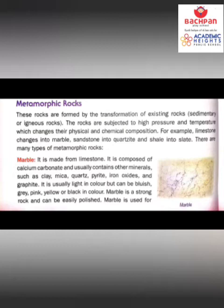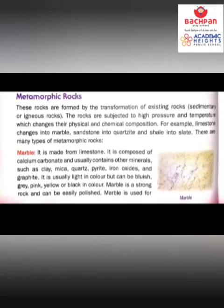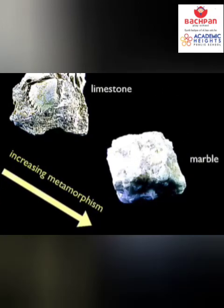Marble is made from limestone. It is composed of calcium carbonate and usually contains other minerals such as clay, mica, quartz, pyrite, iron oxides, and graphite. It is usually light in color but can also be bluish, gray, pink, yellow, or black. Marble is a strong rock and can be easily polished. Increasing heat and pressure turns limestone into marble, and there is quite a lot of similarity between them.